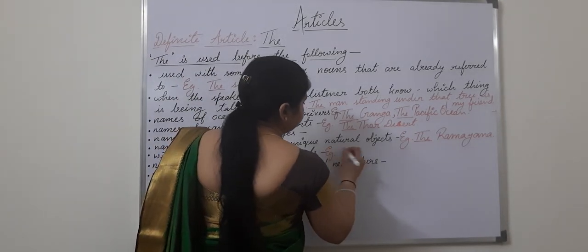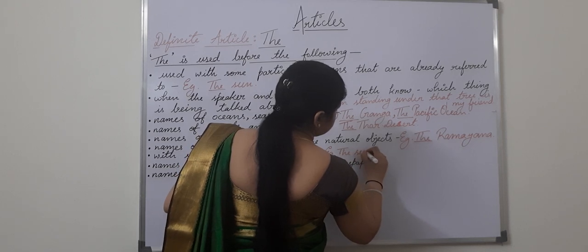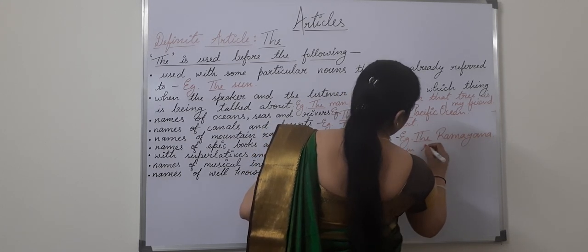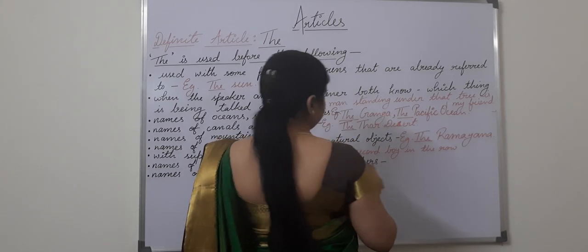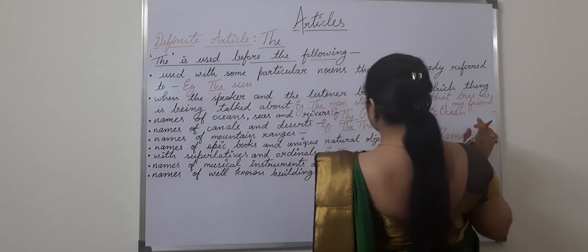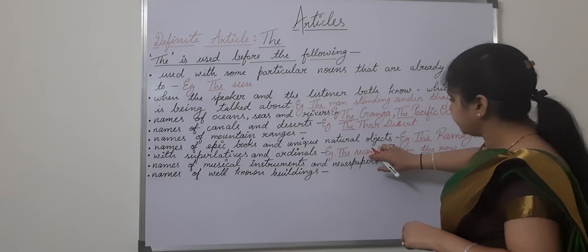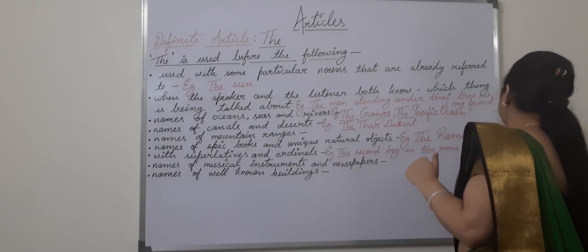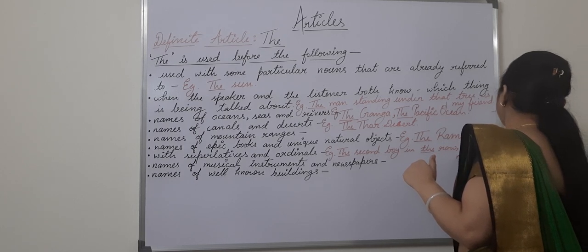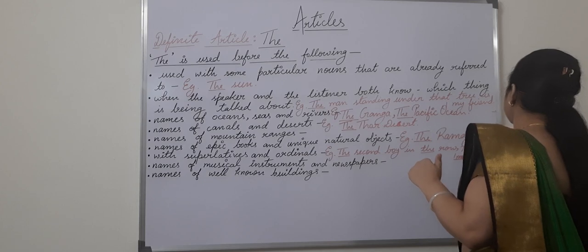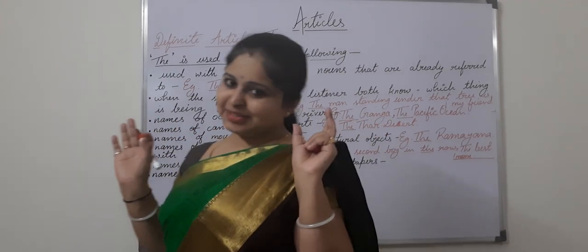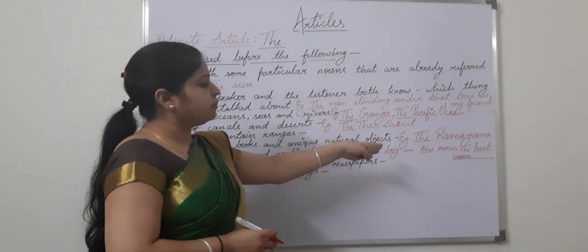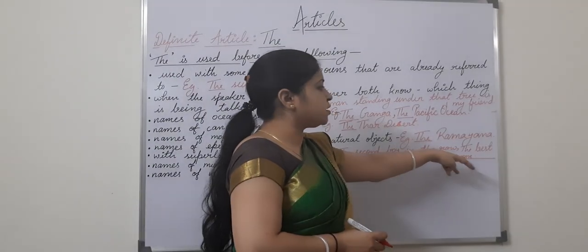For example: 'The second boy in the row' — that particular row I'm talking about, the boy who is second in that row. Another example of superlatives: 'the best mom' — everyone says my mom is the best because you love your mom the most. So 'second' is ordinal, and 'best' is superlative.